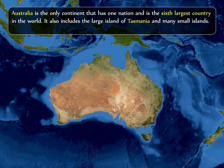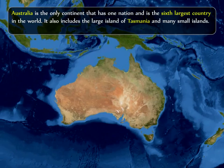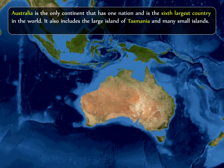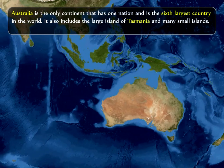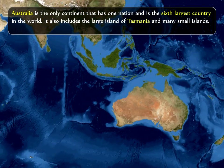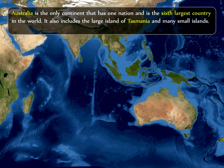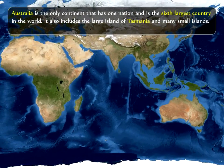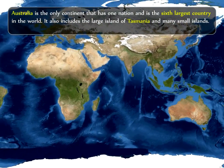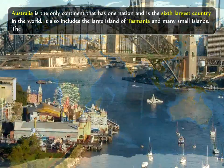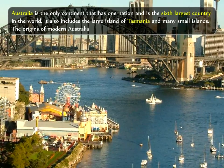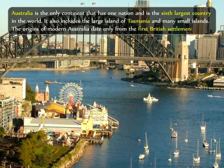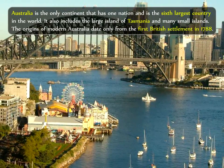Australia is newer than the New World. Europeans settled first in American continents and did not discover Australia until the early 1770s, exploring it even much later. The origins of modern Australia date only from the first British settlement in 1788.